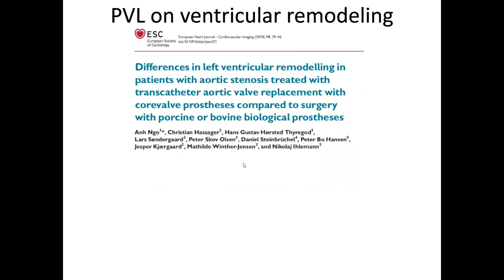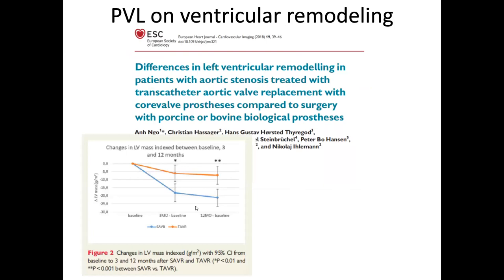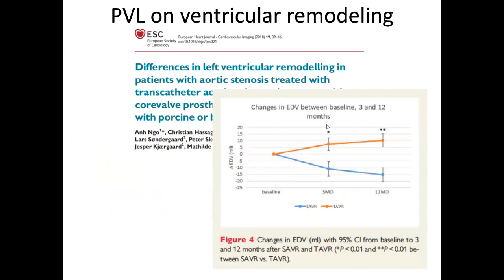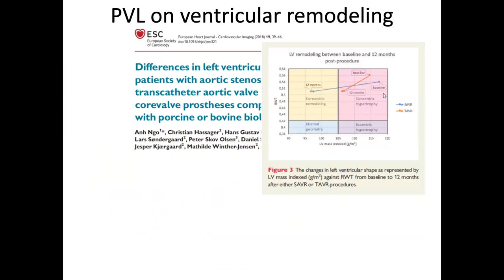Looking at longer-term Notion trial data on PVL and ventricular remodeling: there is less regression of LV mass if you have PVL. SAVR shows more LV mass regression compared to TAVR. The change in end-diastolic volume is less with TAVR patients. In terms of remodeling, with TAVR you stay in concentric hypertrophy, while with SAVR you progress from concentric hypertrophy to concentric remodeling — which is better for the ventricle. We should not minimize mild paravalvular leak.